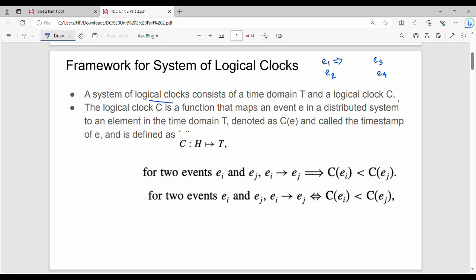For example, events e1, e2, e3, e4. In the logical clock C, it is a function that maps an event e to an element in the time domain T.